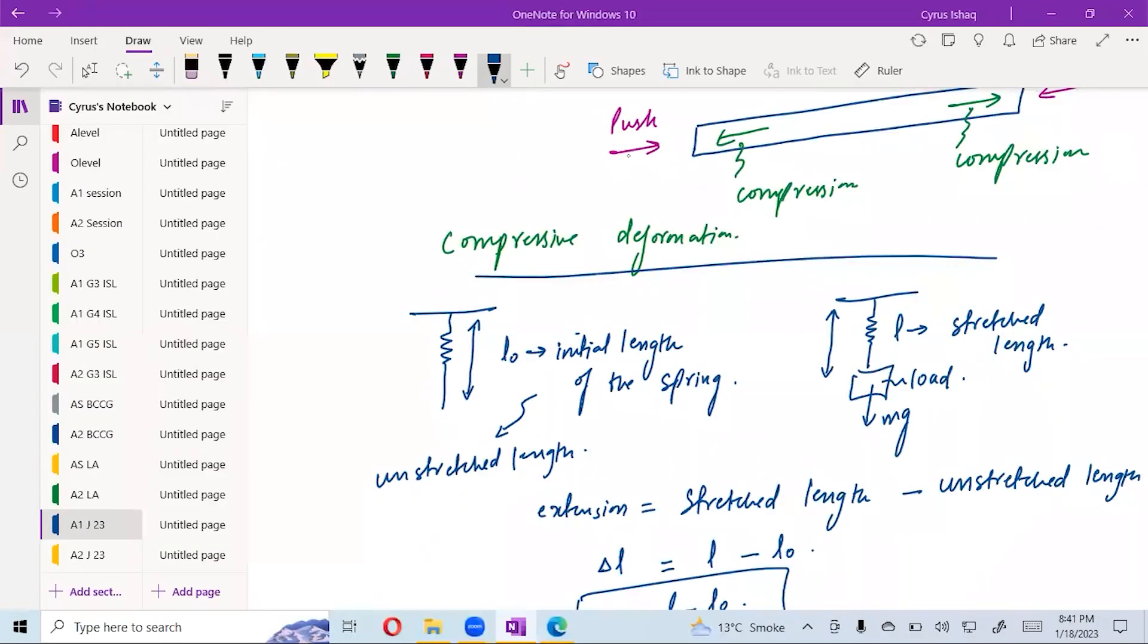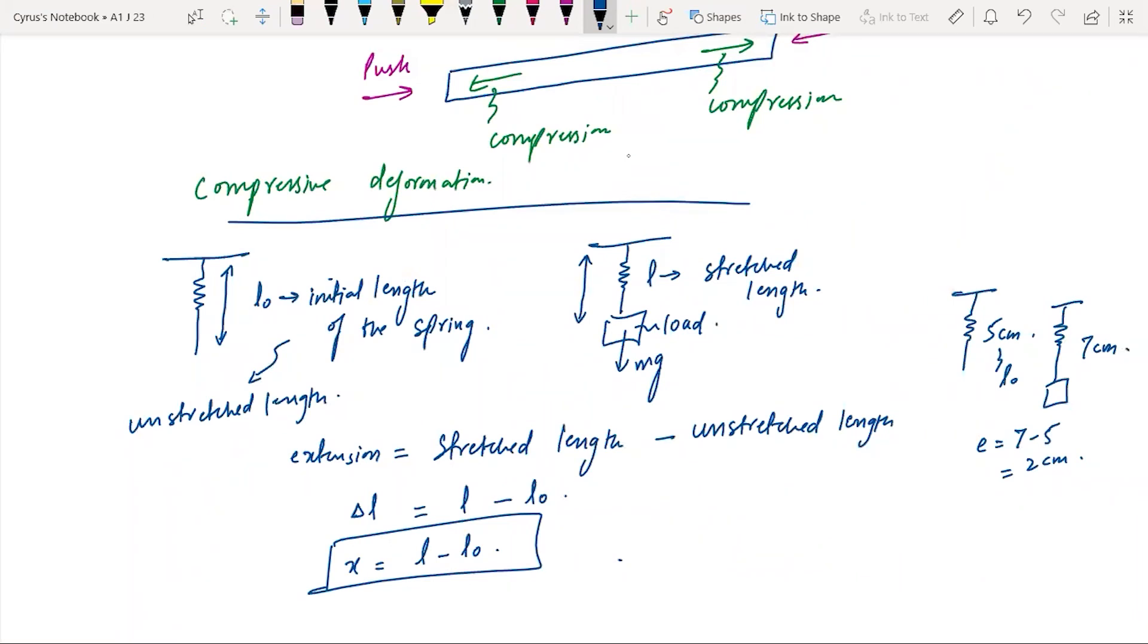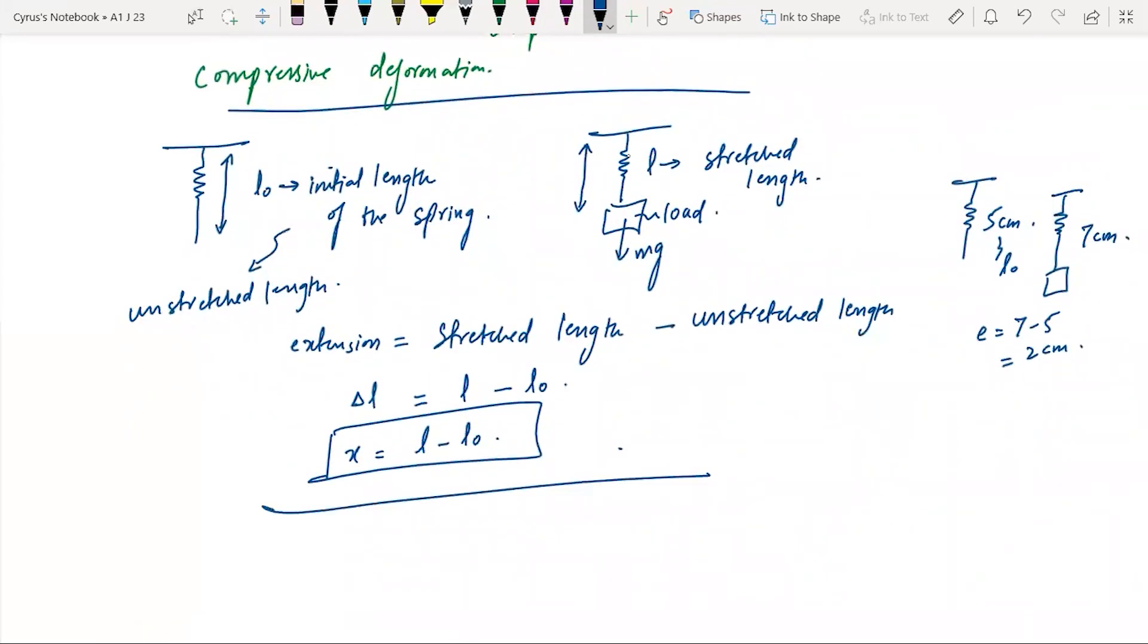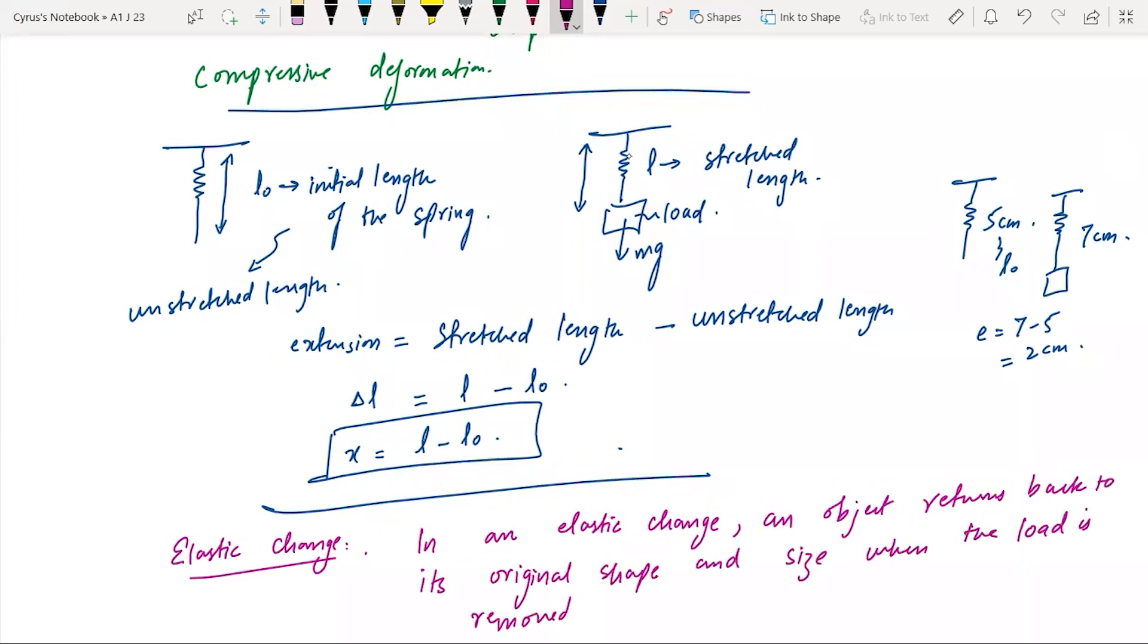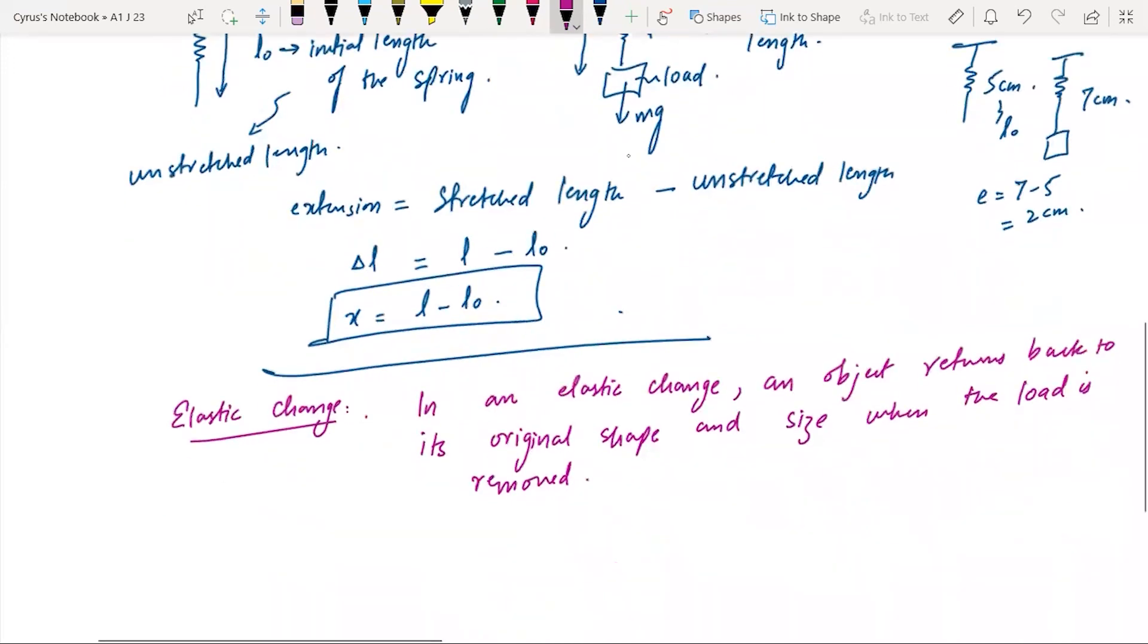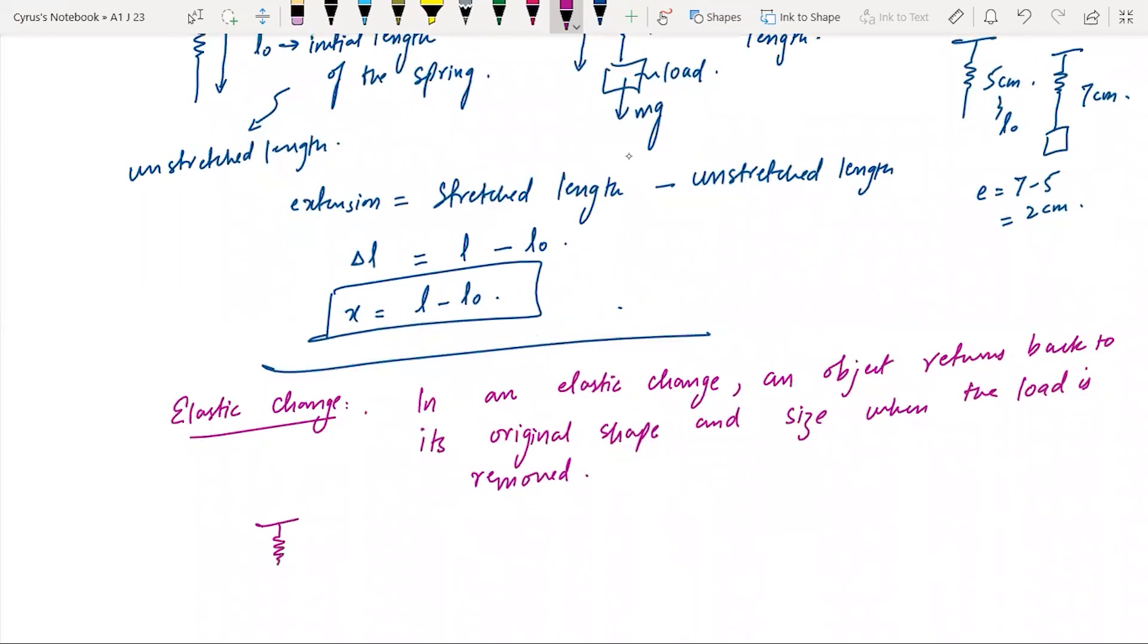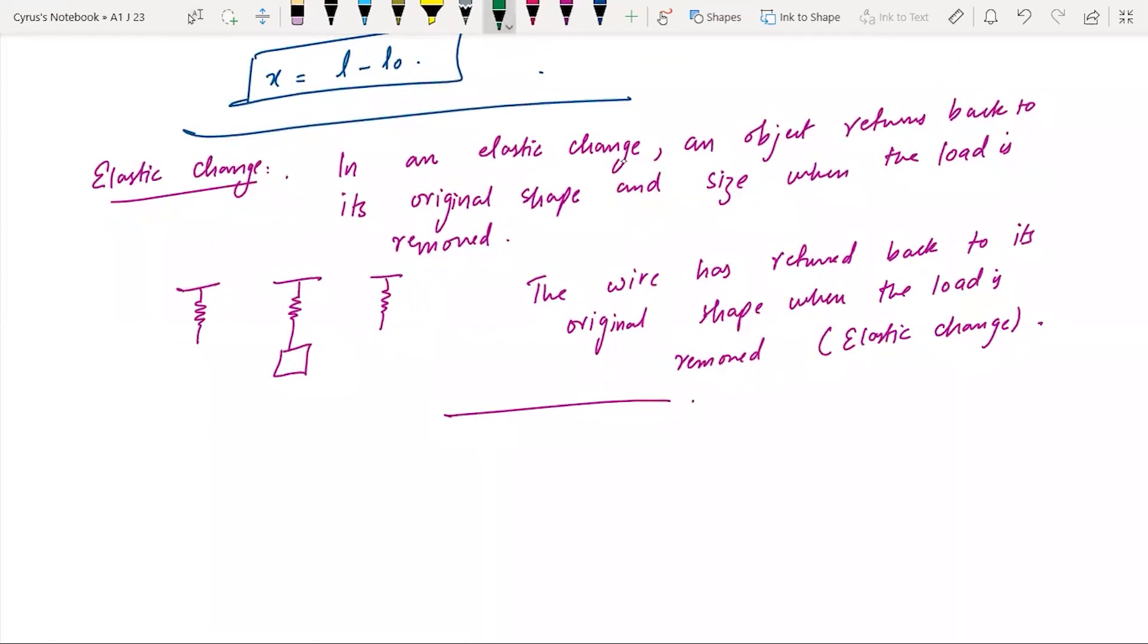Whenever we attach a load with the wire there are two things: one is elastic change, one is plastic change. In an elastic change, an object returns back to its original shape and size when the load is removed. For example, I had here a spring and I attached a load with it, and when the load is removed it returns to the original shape.